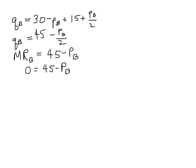So Babette prices at 45. Now Francois just reacts, right? His reaction function is 15 plus PB over 2. 15 plus 22.5 is 37.5.